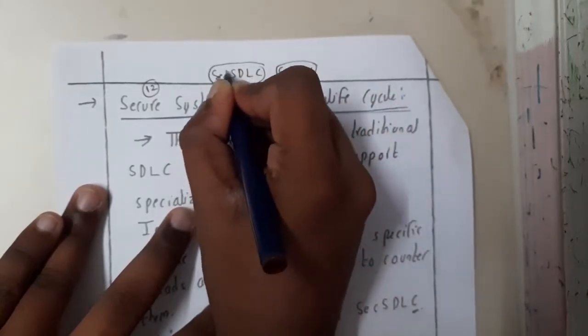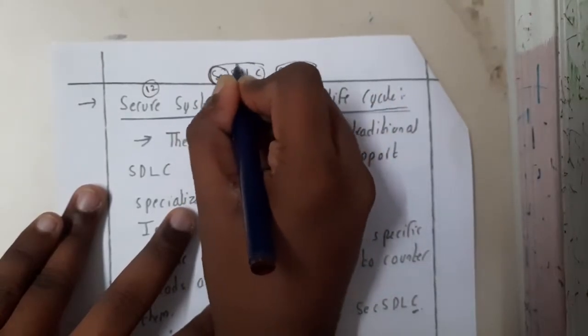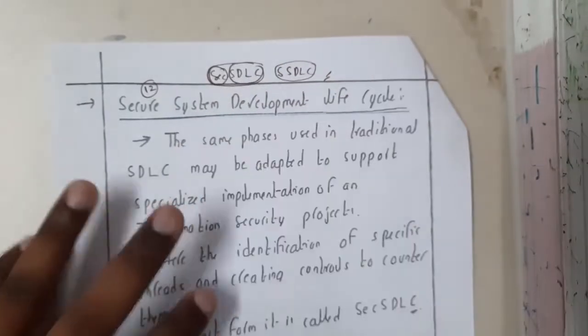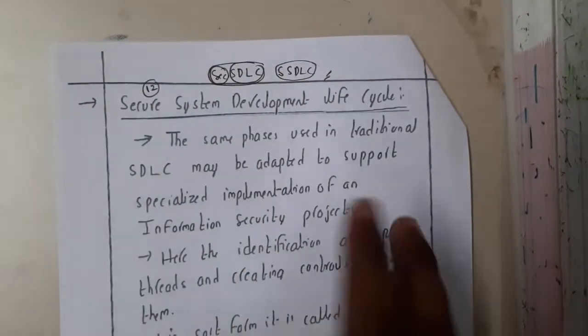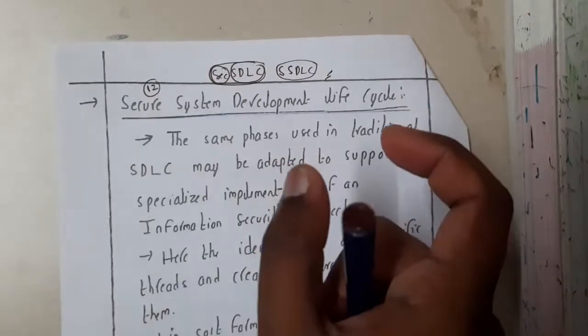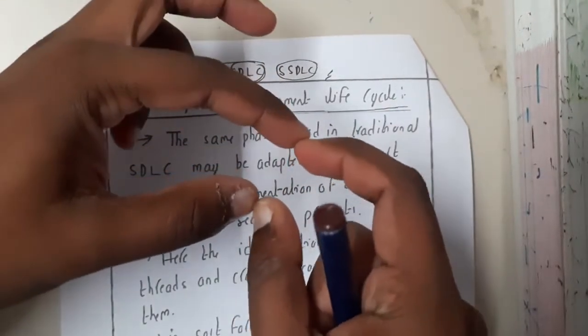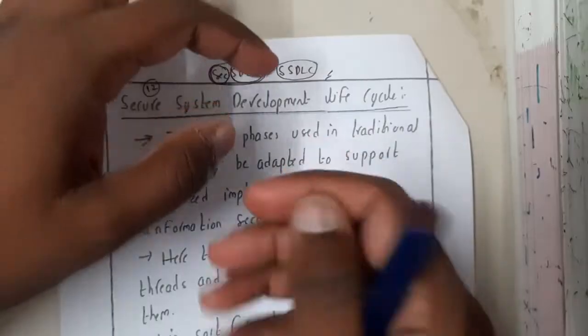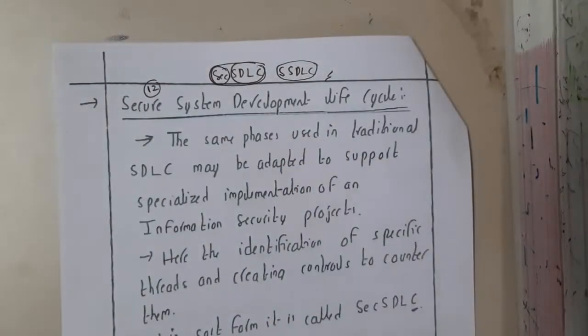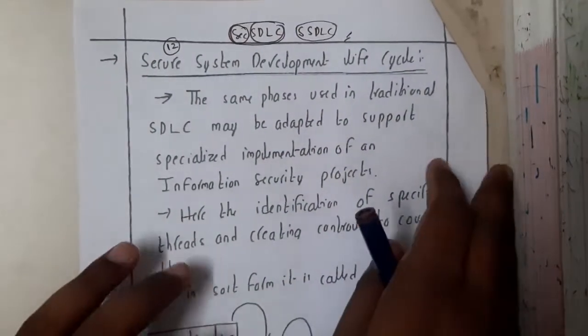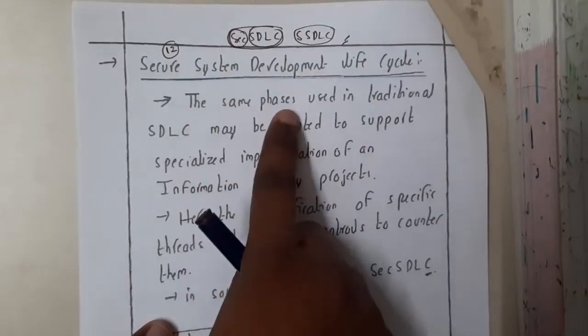So it is always better to write Sec SDLC because it will be saying that security after that SDLC. So it is also a similar process like SDLC. If you add some security with it, so it becomes Sec SDLC. That is another Secured SDLC.